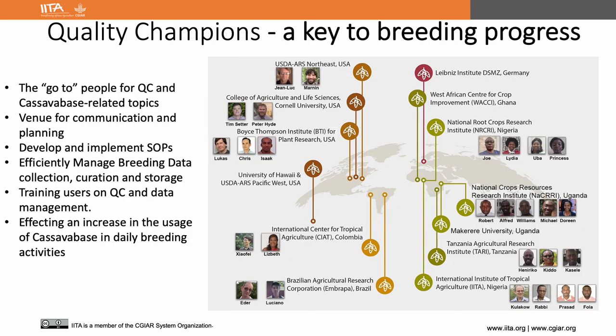Under the NexGen Cassava project, we have created a Quality Champs team who are the go-to people for quality control and CassavaBase-related topics. These are quality leads and champs representing different breeding programs. They bring good diversity of people represented from different disciplines like research, field operations, database development, genomics, and breeding. QChamps are the first contact persons to seek help related to any quality issues in their respective breeding programs, and they are responsible for handling and uploading quality data into CassavaBase.